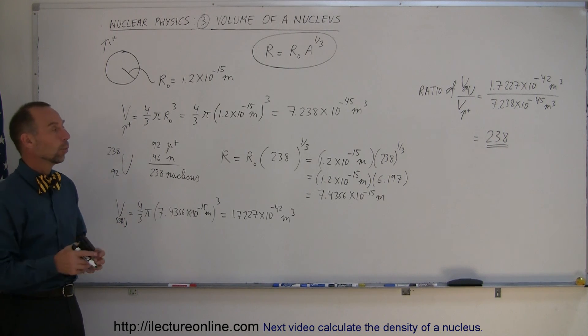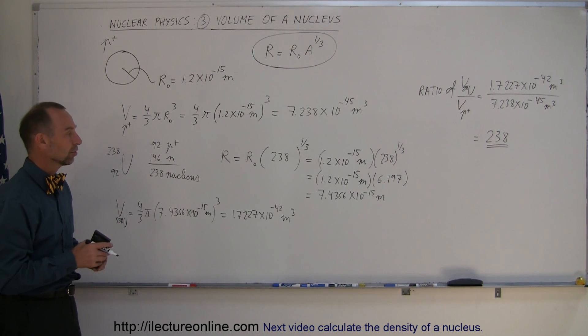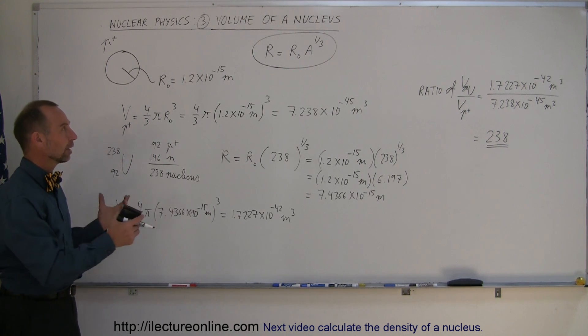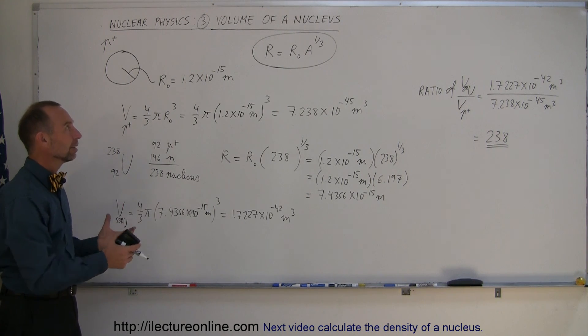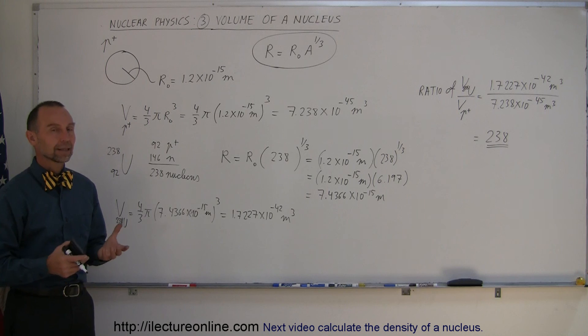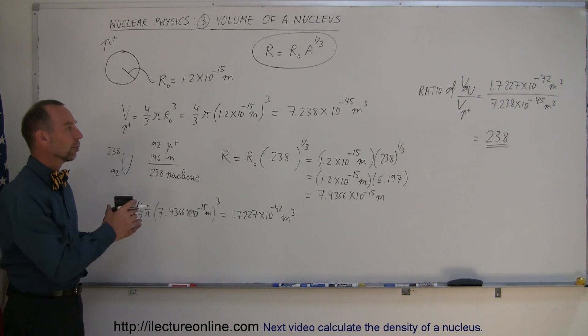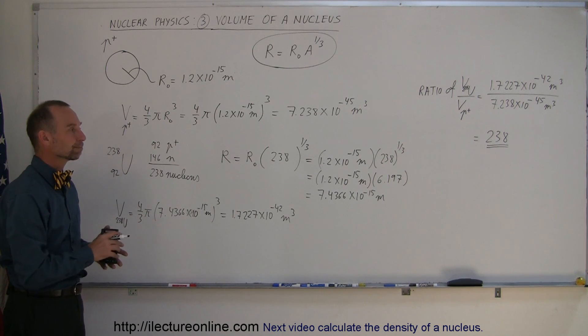This seems to indicate that the volume of any nucleus divided by the volume of a proton will always equal the total number of nucleons in that nucleus, no matter what the nucleus is. There you have a feel for how to calculate the volume of a nucleus and what it means.